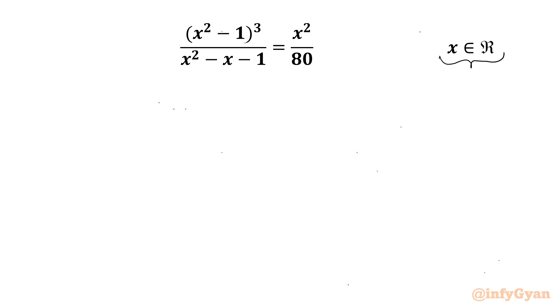So let's get started by writing: the denominator cannot be 0, so x squared minus x minus 1 cannot be 0.